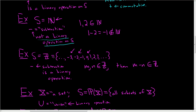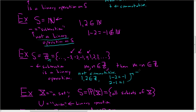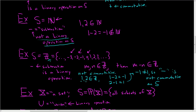In the next example we had subtraction on the integers — that is a binary operation, but it is not commutative. Why? If you take the numbers 1 and 2, look at 1 − 2 = −1, but 2 − 1 = 1, and −1 ≠ 1. To show something is not commutative, all we have to do is find one pair where it fails — we found the pair 1 and 2.